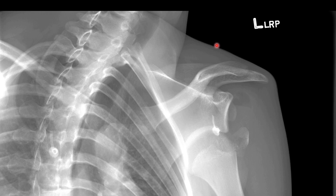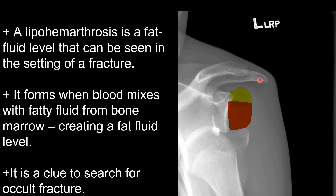Here's our first case. We have an anterior shoulder dislocation with an associated fracture as well as a fat fluid level. A lipohemarthrosis occurs when fat and blood from the fractured bone mix in the joint space and create this differential fat fluid level. In cases where we have a known fracture, the lipohemarthrosis is less useful. However, in cases where we do not see a fracture, the lipohemarthrosis should clue us into the fact that there may be an occult fracture.